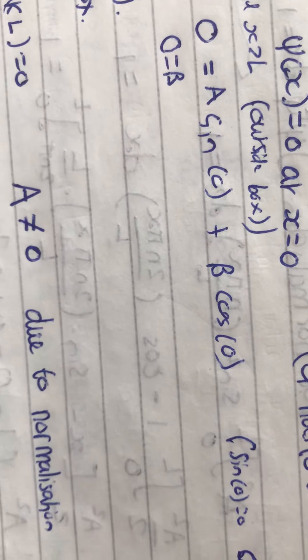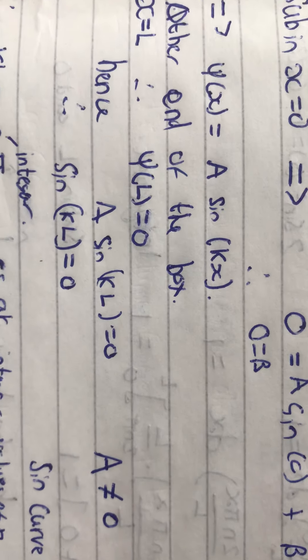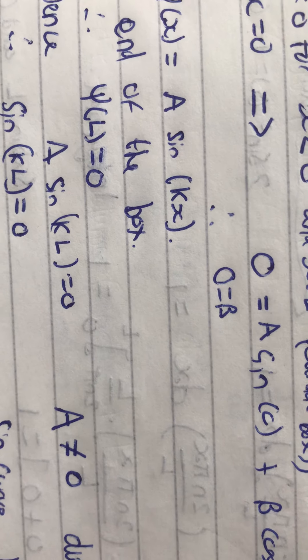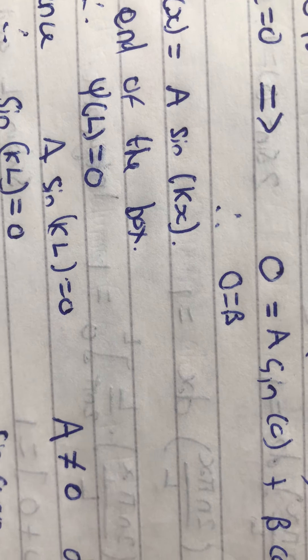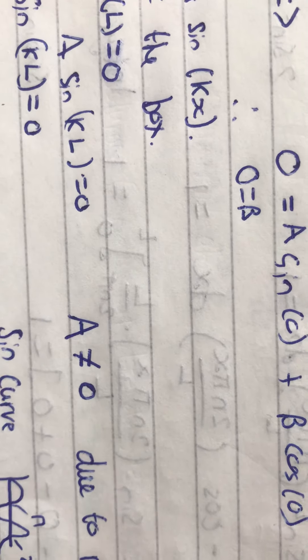And a can't equal 0 due to the normalization. And sin(kL) therefore equals 0. And yeah, I think that's pretty much it. So, you've got a sin curve.